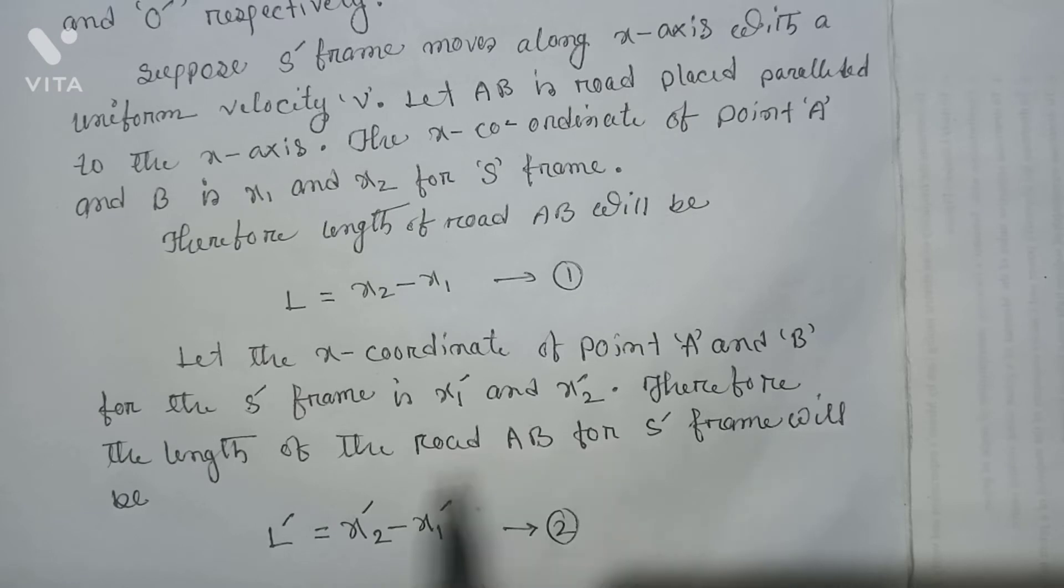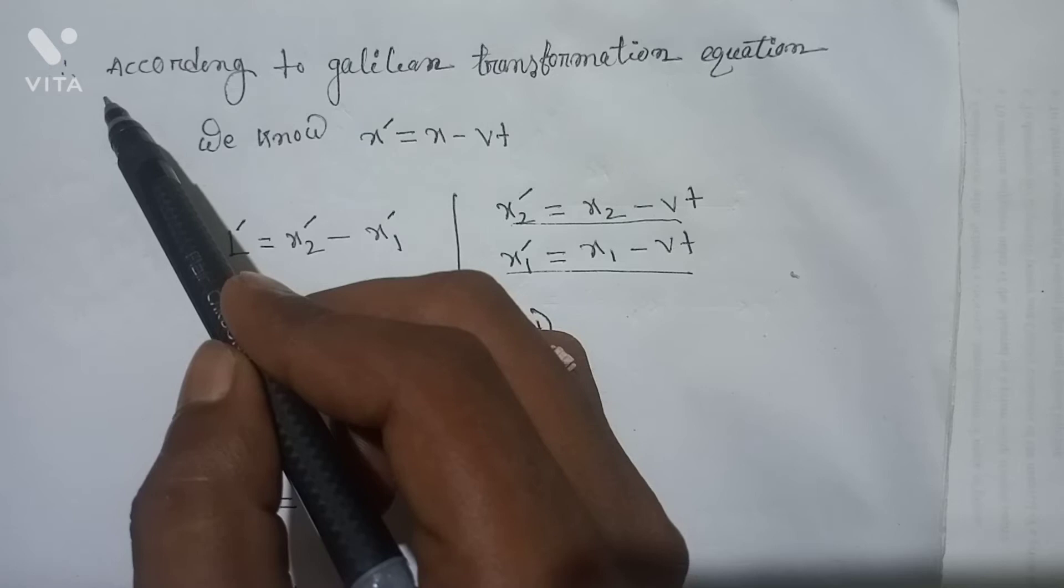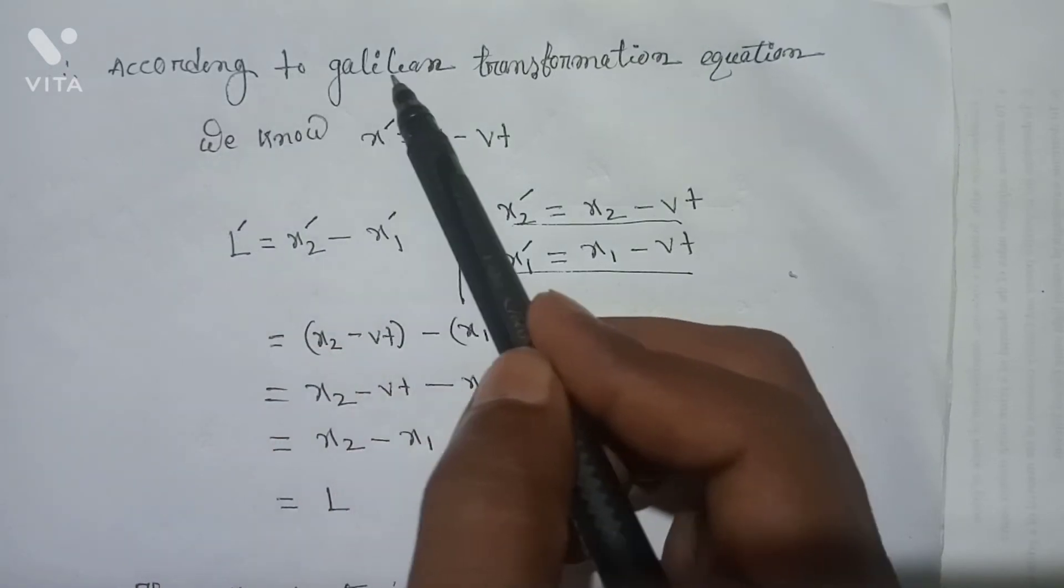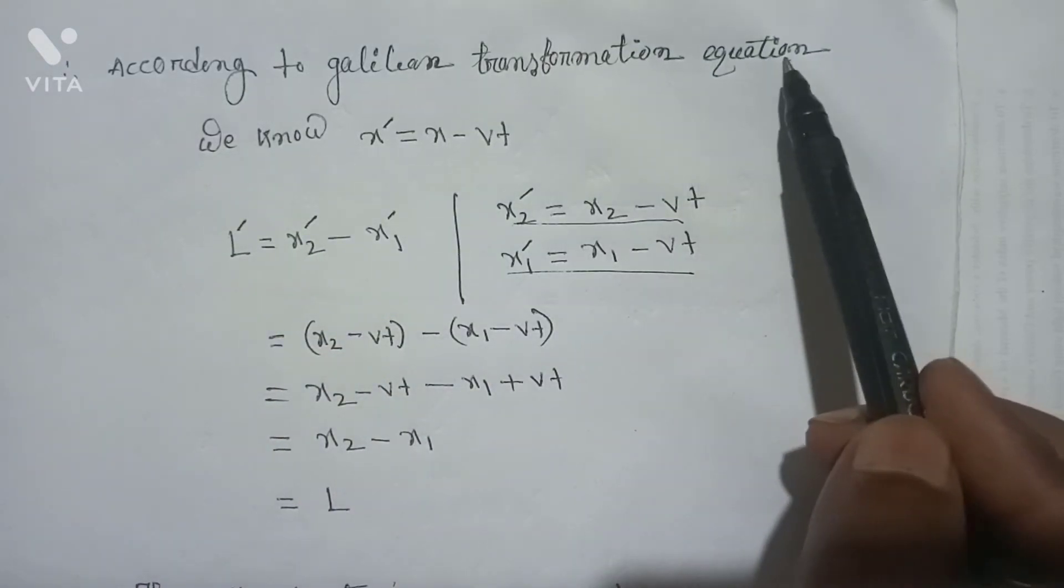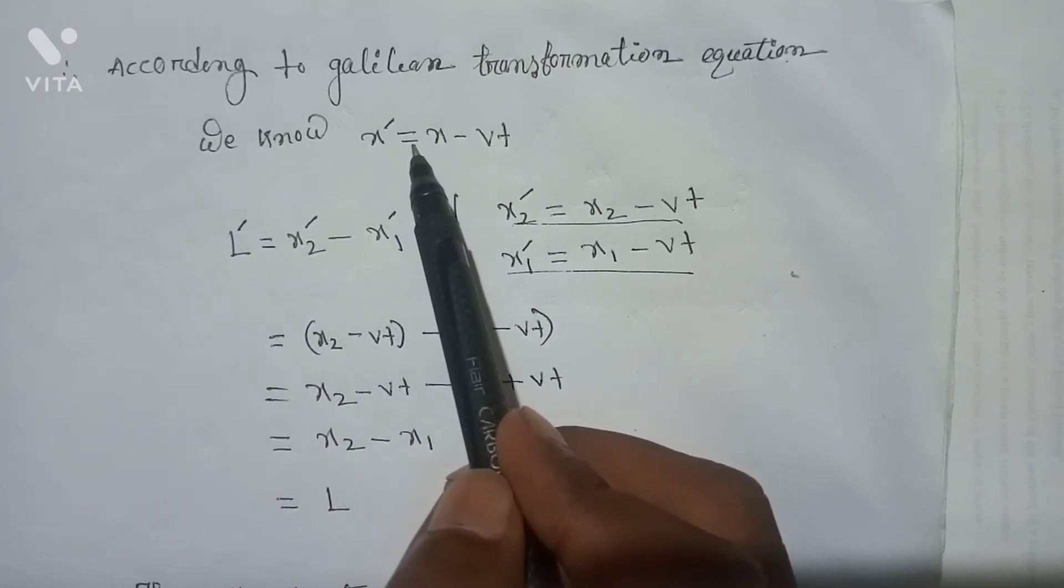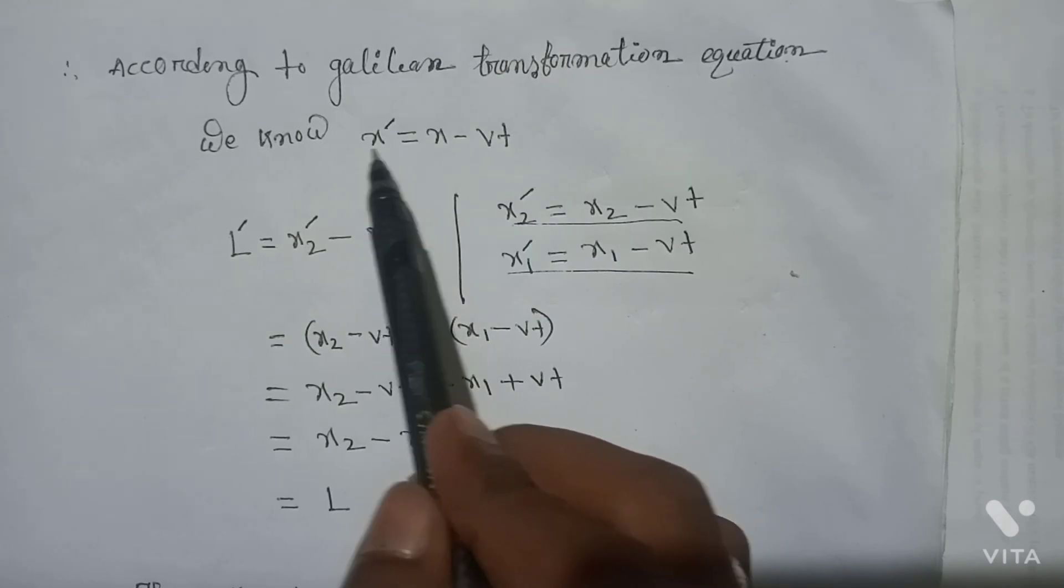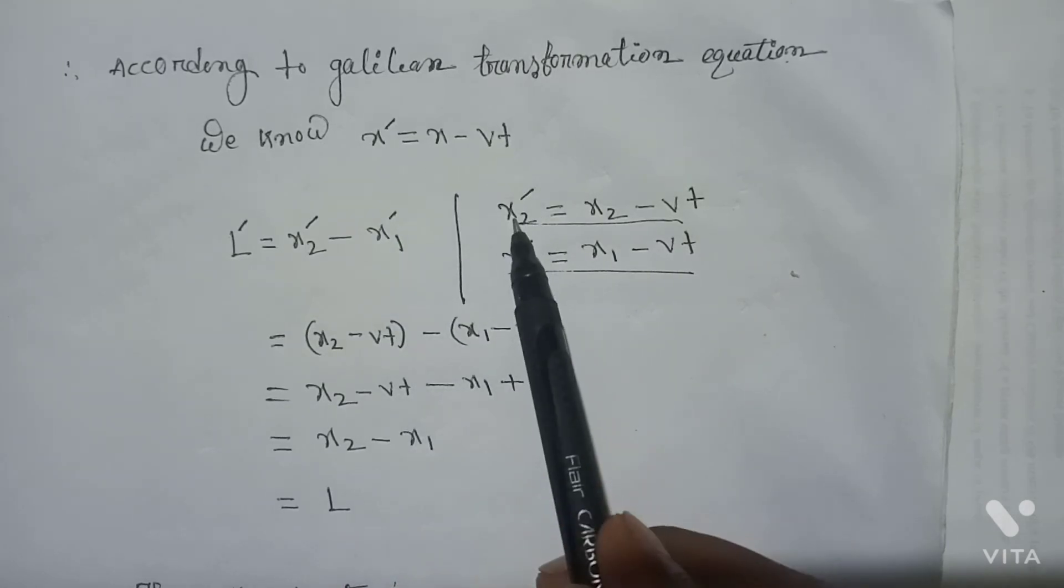According to Galilean transformation equation, we know that x' = x - vt. Taking this equation as x'₂ = x₂ - vt and x'₁ = x₁ - vt...